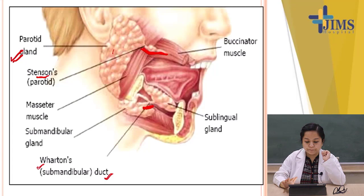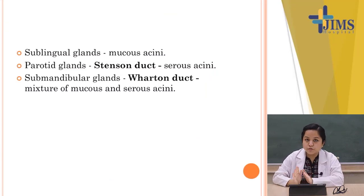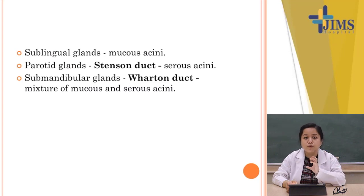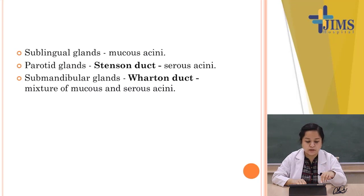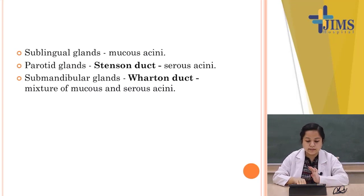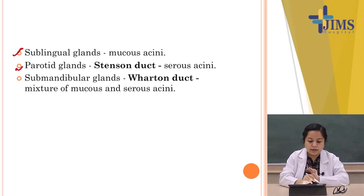Histologically, these three glands have different morphology. The sublingual gland, below the tongue, is predominantly made up of mucinous acini. The parotid is made up of serous acini. The submandibular gland has both mucous and serous acini.